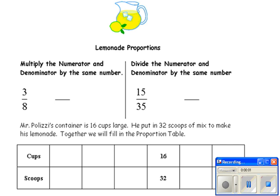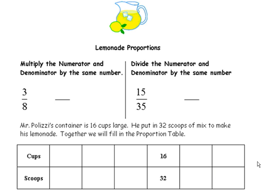Hello everyone. This screencast is going to talk about setting up equivalent ratios to get a proportion. If I start with a ratio of 3 eighths and I want to get an equivalent ratio to 3 eighths, it's sort of like finding an equivalent fraction.